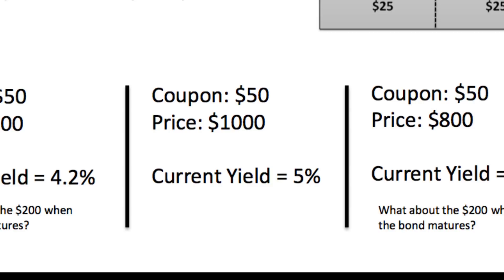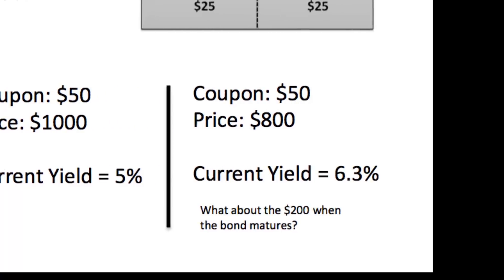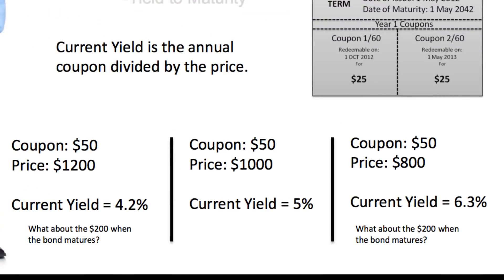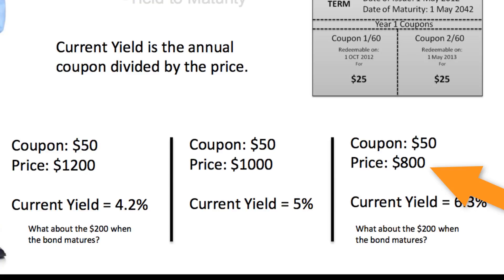We're talking about the same exact bond in each case — no difference in the bond itself, just the price at which Jesse is buying it and how that price affects the yield. The problem with the current yield is that it doesn't account for the amount of money you lose or gain when the bond matures.